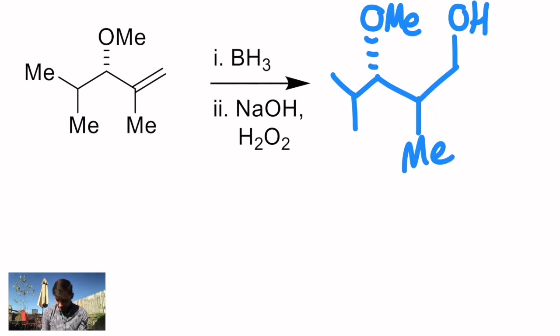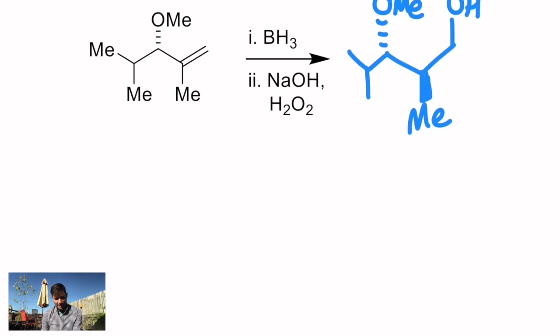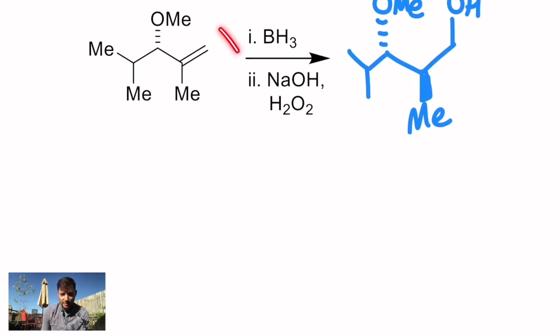And you'll notice we created a new stereocenter, but we actually created it here, not where the OH is attached. And I'll tell you, because of the existing stereochemistry, you get the methyl pointed toward you in that regard. So I'd like you to try and practice this. See if you can hit pause and redraw the starting material, minimizing the allylic 1,3 strain, and then make sense of why attack occurs to give you this diastereomer in the end.